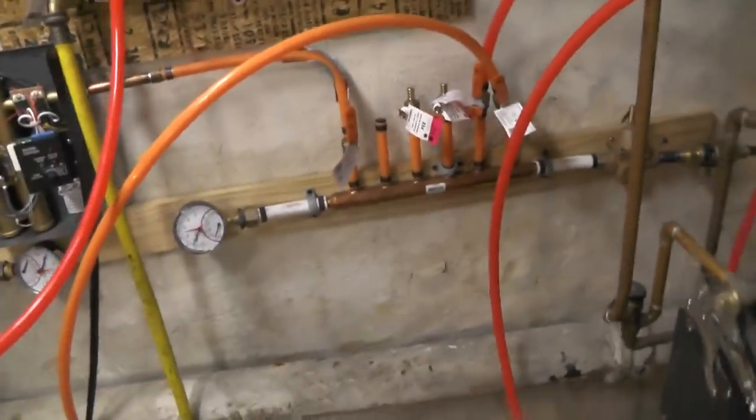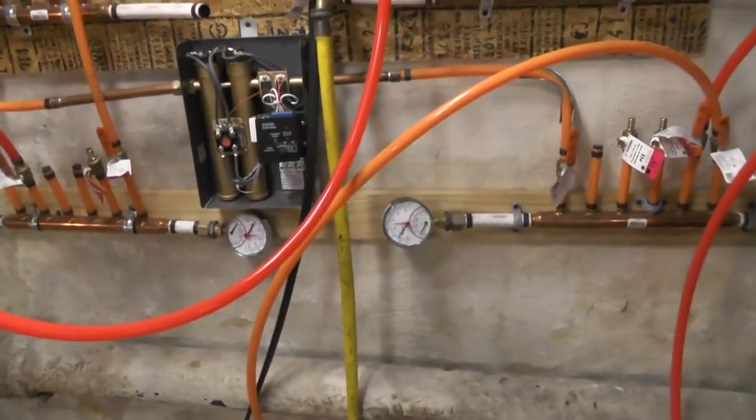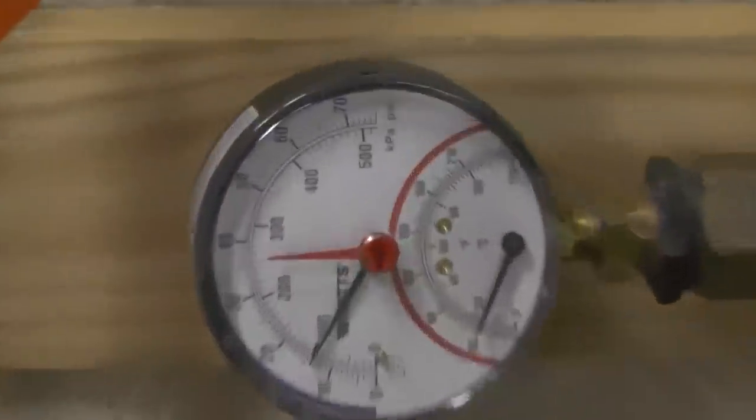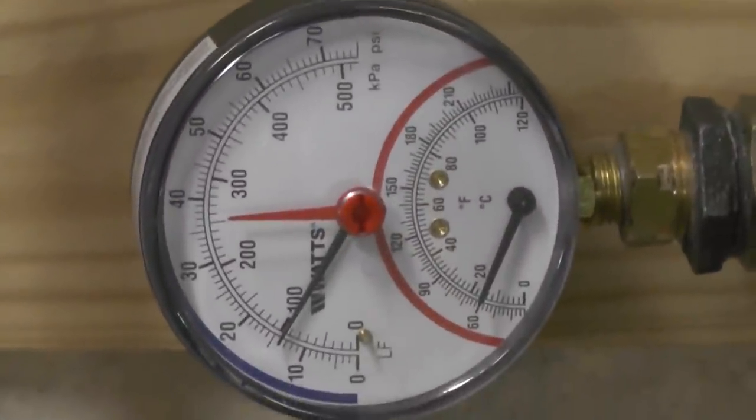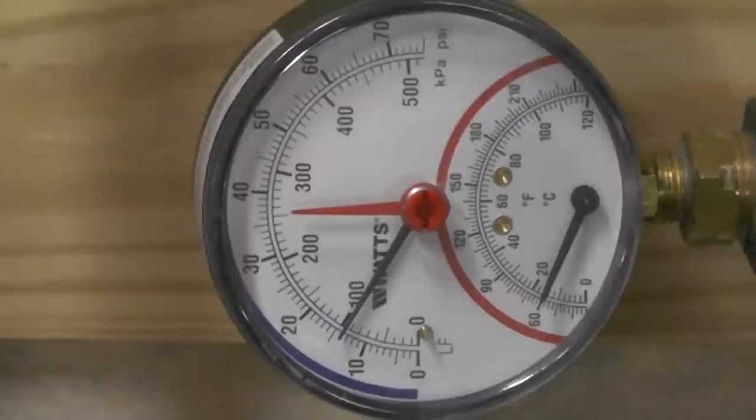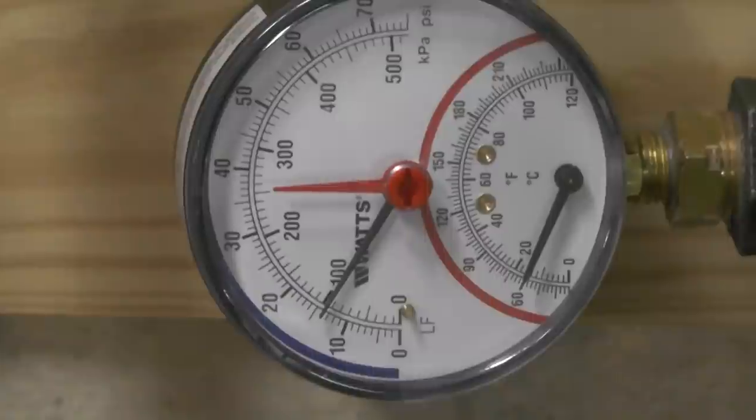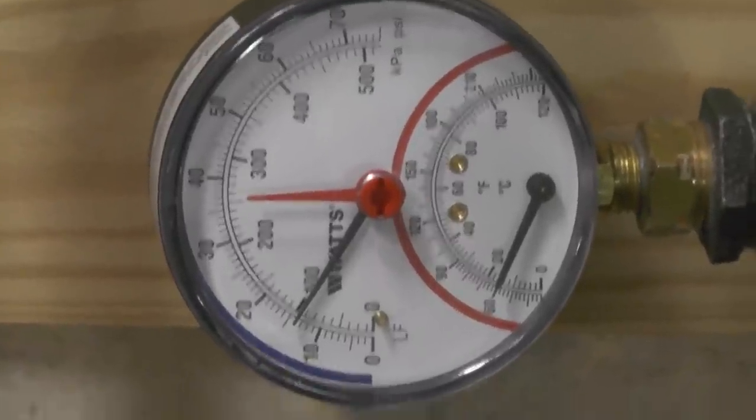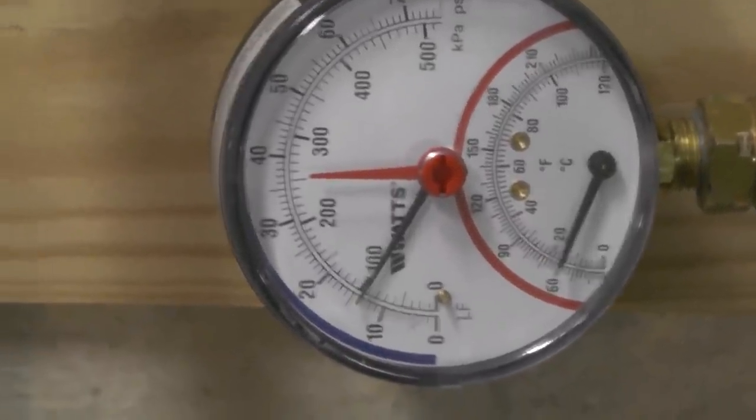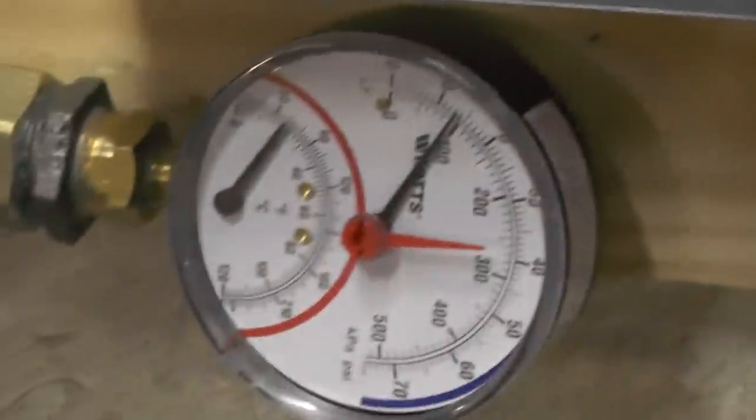And so I'll go over the gauges real quick. This is measuring the return water so right now the system shut down, it's not working, so it's why it's showing about 60 degrees and it runs usually around 12 psi. Right now it's sitting static at 14.